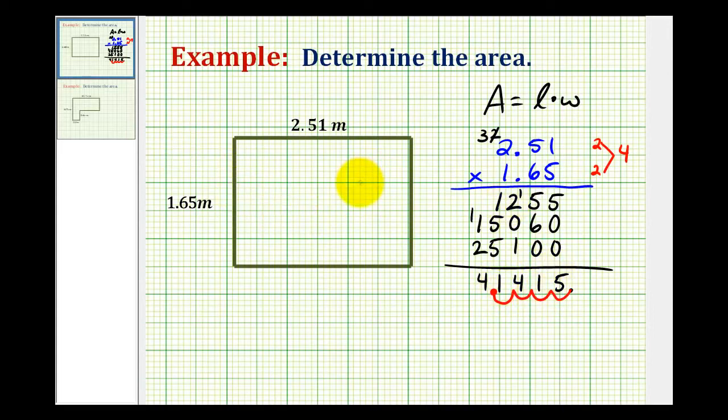So the product of the decimals would be 4.1415, which would be the area of our rectangle. So our area is equal to 4.1415, which would be 4 and 1,415 ten thousandths. And because we're multiplying meters times meters, the units would be meters squared. So this tells us that just over 4 square meters would fit inside this rectangle.